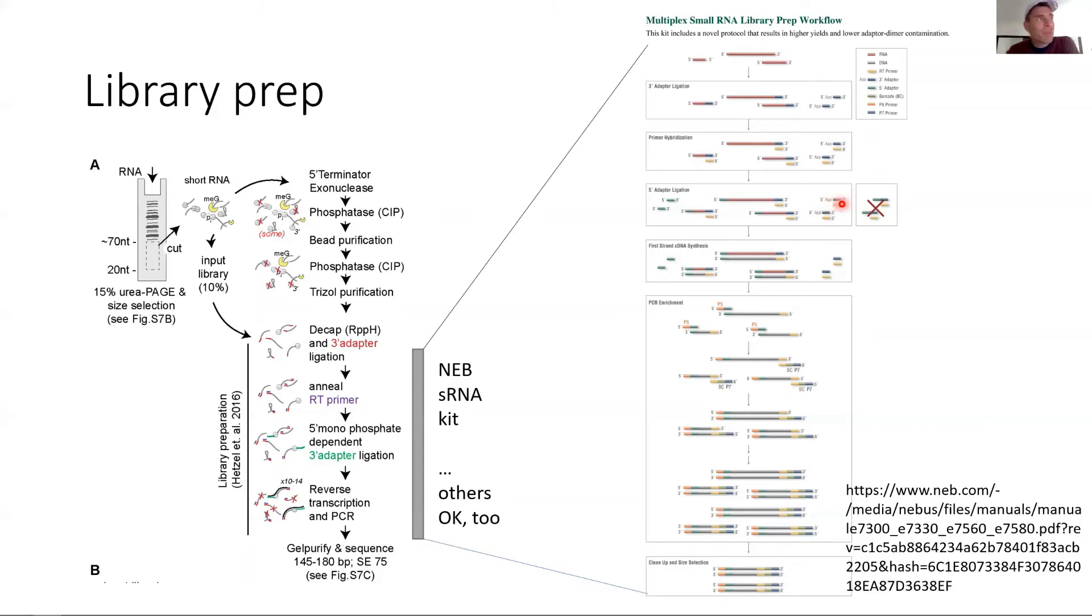Here a quick word of caution: the 3-prime adapters are 5-prime adenylated capped. Those of you who are paying attention will realize that RPPH would actually de-adenylate 3-prime adapters. Lucky us, as described in the Hetzel paper, RPPH is not active at 22 and 25 degrees. This is why it's important in the protocol to do the 3-prime adapter ligation at 22 degrees. It also works at 25, but 23 is probably the best. After that we anneal to generate this double-stranded.